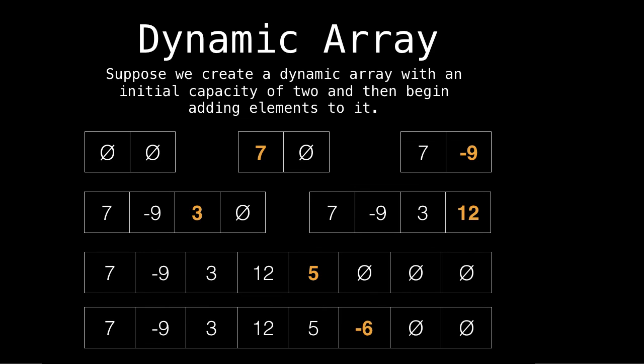So suppose we create a dynamic array with an initial capacity of two, then we begin adding elements to it. So the little circle with the slash through it is a placeholder for an empty position. Okay, so we add seven, everything's fine, we add nine, everything's fine.